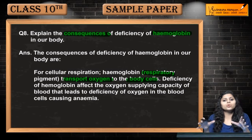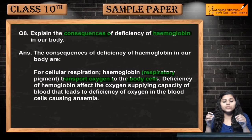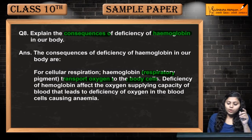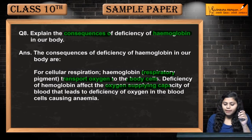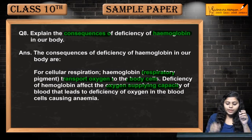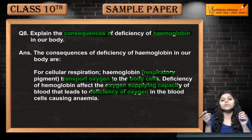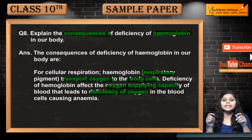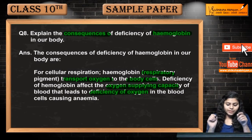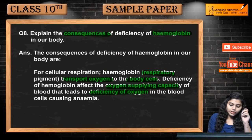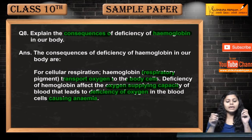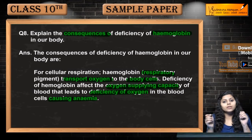If hemoglobin becomes deficient, then the supply of oxygen will be reduced. That will lead to the deficiency of oxygen in the blood, and the condition that will result in our body is anemia.